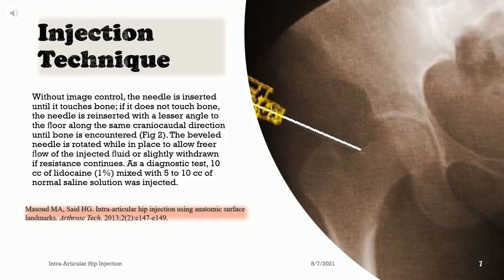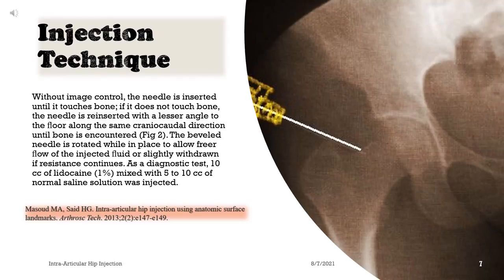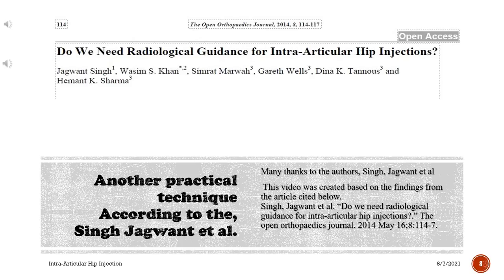Without image control, the needle is inserted until it touches bone. If it does not touch bone, the needle is reinserted with a lesser angle to the floor along the same craniocaudal direction until bone is encountered. The beveled needle is rotated while in place to allow freer flow of the injected fluid, or slightly withdrawn if resistance continues. As a diagnostic test, 10 mL of lidocaine 1% mixed with 5 to 10 cc of normal saline solution is injected.